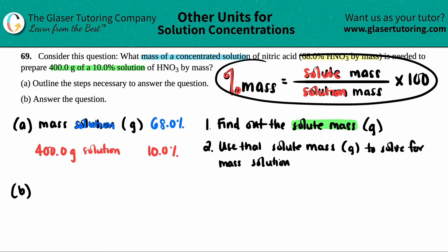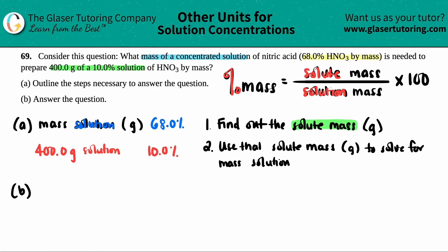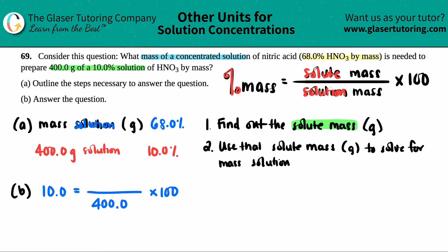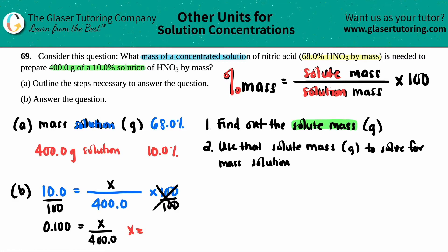For part B: using the percent mass formula with the 10.0 percent solution, we set up 10.0 = (x / 400) × 100. The 400 grams of solution goes on the bottom. Dividing both sides by 100 gives 0.1 = x / 400. Cross-multiplying: x = 400 × 0.1 = 40 grams. That's the solute mass.